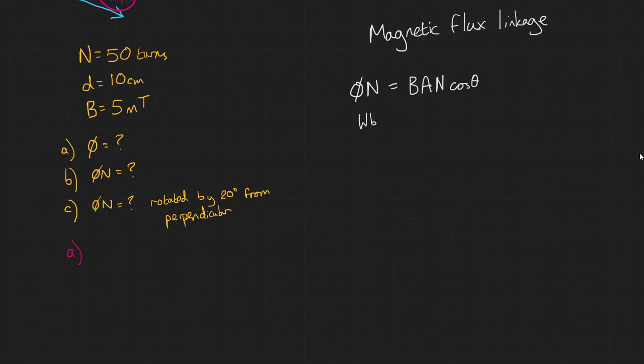So first, let's calculate the magnetic flux. Phi equals BA. So our magnetic flux density here, 5 milliteslas, multiplied by our area, pi d squared divided by 4, gives us 3.93 times 10 to the minus 5 Webers.